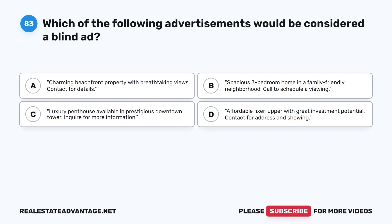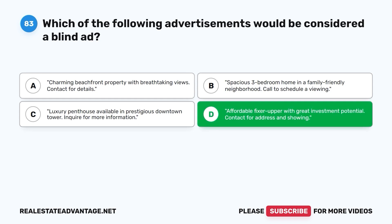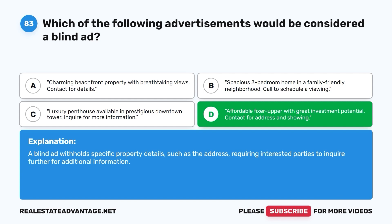Question 83. Which of the following advertisements would be considered a blind ad? A. Charming beachfront property with breathtaking views — contact for details. B. Spacious three-bedroom home in a family-friendly neighborhood — call to schedule a viewing. C. Luxury penthouse available in prestigious downtown tower — inquire for more information. D. Affordable fixer-upper with great investment potential — contact for address and showing. The correct answer is D. A blind ad withholds specific property details such as the address, requiring interested parties to inquire further for additional information.